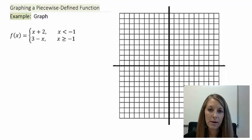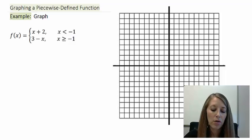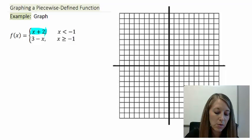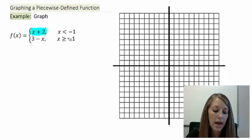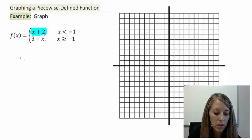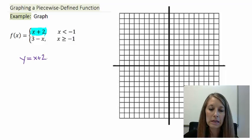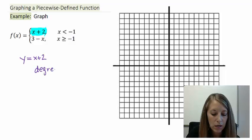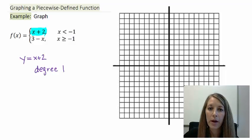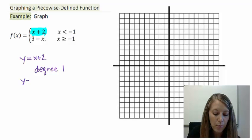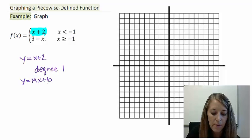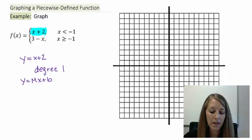We're going to graph this example piece by piece. The first thing I'm going to do is just focus on x plus 2 — I'm not going to look at the interval or the second piece at this time. So basically we want to graph y equals x plus 2. We should be able to pick out its degree. The highest exponent isn't even visible, so this is a degree 1 equation, and degree 1 equations produce lines. We compare it to y equals mx plus b, where b is the y-intercept and m is the slope.